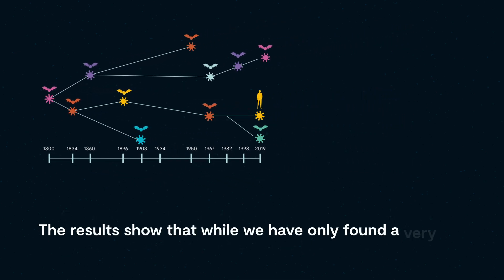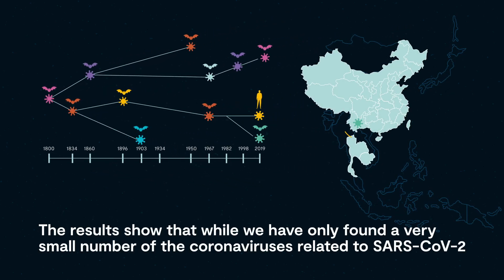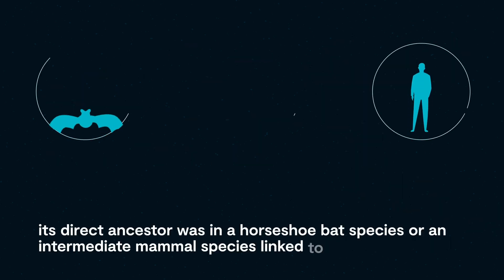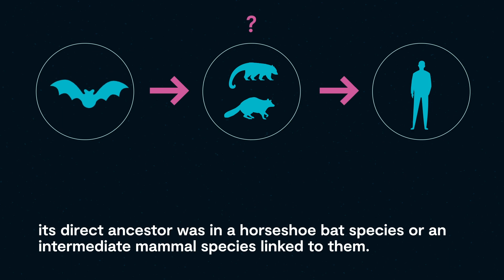The results show that while we have only found a very small number of the coronaviruses related to SARS-CoV-2, its direct ancestor was in a horseshoe bat species or an intermediate mammal species linked to them.